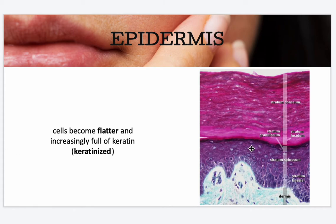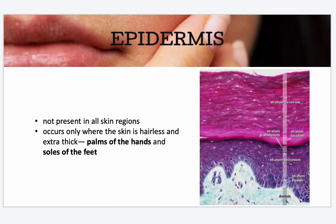The cells become flatter and increasingly full of keratin as they move away from the dermis. As they get further from the dermis, they approach the outside world and need to keratinize to fulfill their protective function. As the cells leave the stratum granulosum, they die, forming the clear stratum lucidum.